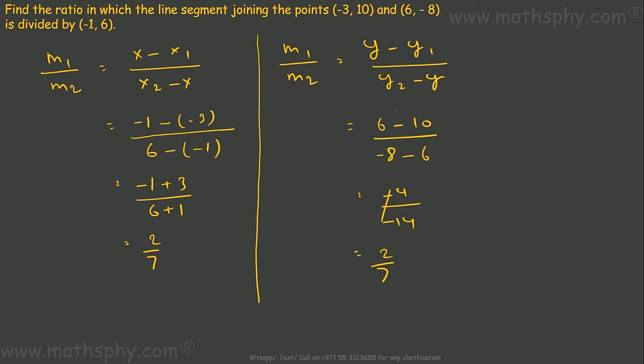So the ratio is 2/7. M1 is 2, M2 is 7. You can find it through X or Y, either of them.